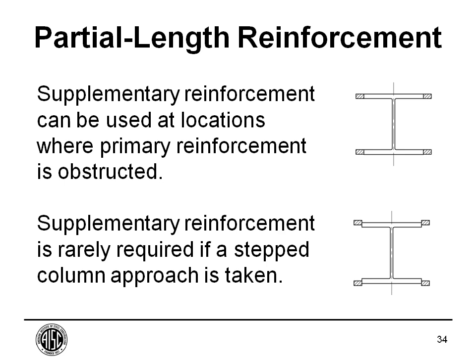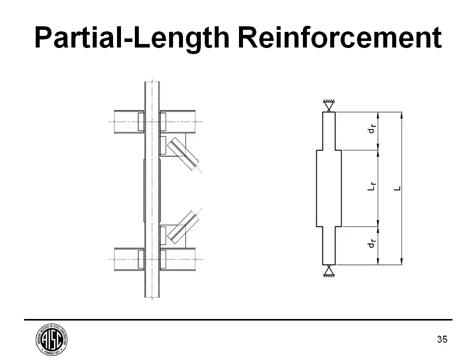Here's what's done sometimes — if you've got obstructions on the flange, you can stop your reinforcement short and add tab plates, sometimes called wing plates. The most economical way is to just shift that plate over — maybe half an inch — to give enough room for a fillet weld, and then put stitch fillet welds for this reinforcement. Hopefully we'll be able to use the step-column approach and be able to avoid that type of reinforcement altogether. I rarely use tab plates.